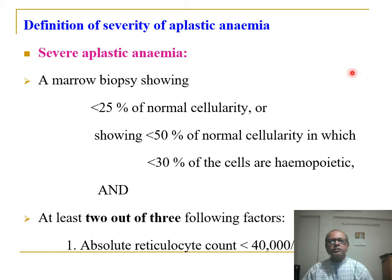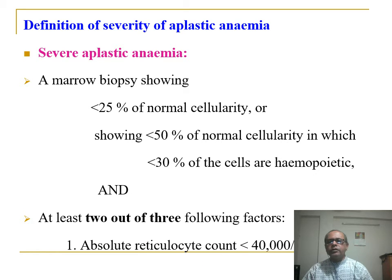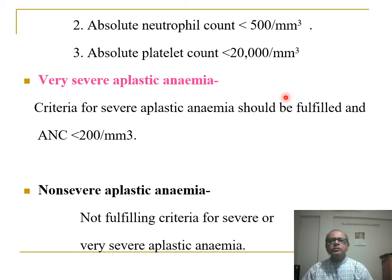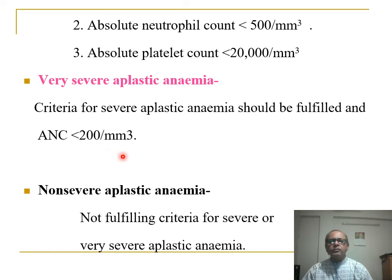Severity classification: Severe aplastic anemia is when bone marrow biopsy shows less than 25% of normal cellularity, or less than 50% of normal cellularity in which less than 30% of cells are hemopoietic, plus at least two of three: absolute reticulocyte count less than 40,000×10⁹, absolute neutrophil count less than 500 per cubic millimeter, platelet count less than 20,000 per cubic millimeter. Very severe aplastic anemia fulfills severe criteria and has absolute neutrophil count less than 200 per cubic millimeter. Non-severe aplastic anemia does not fulfill criteria for severe or very severe.